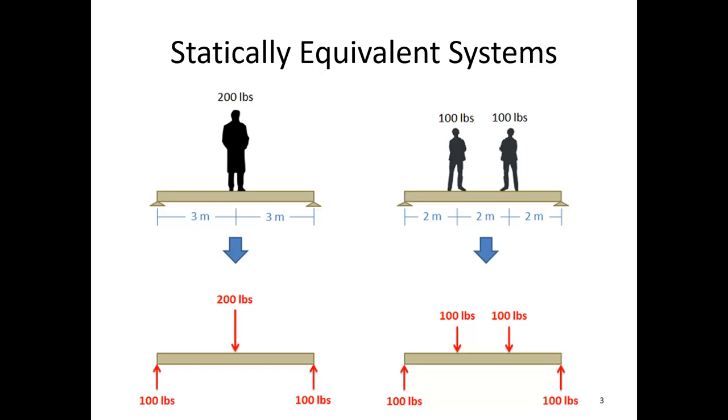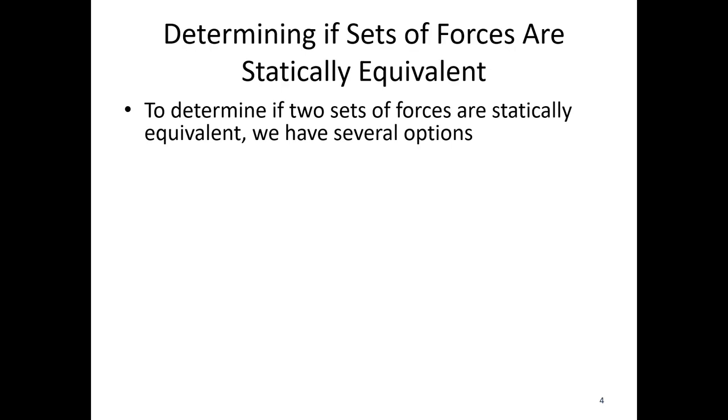Here is an example of a statically equivalent system. Imagine we've got a balance beam. If we put one 200-pound man in the center of the balance beam, as opposed to two 100-pound children on either side of the beam, they'd wind up causing the same reaction. Down here you can see 100 pounds supporting either side. Over here I've got the same 100 pounds supporting on either side. So this 200-pound force and this evenly distributed 100-pound force would be considered statically equivalent because they cause the same reactions. If we had a free-floating beam, we'd have the same accelerations as well as this thing moved through space.